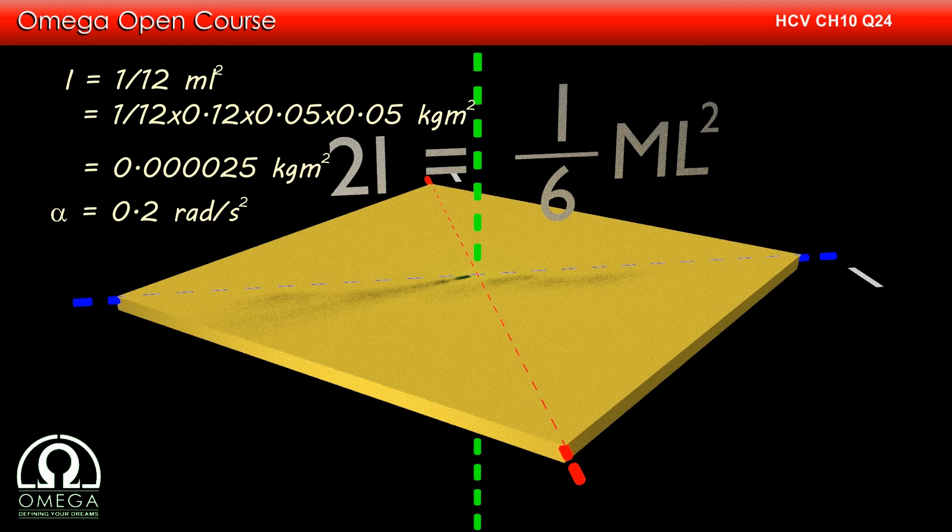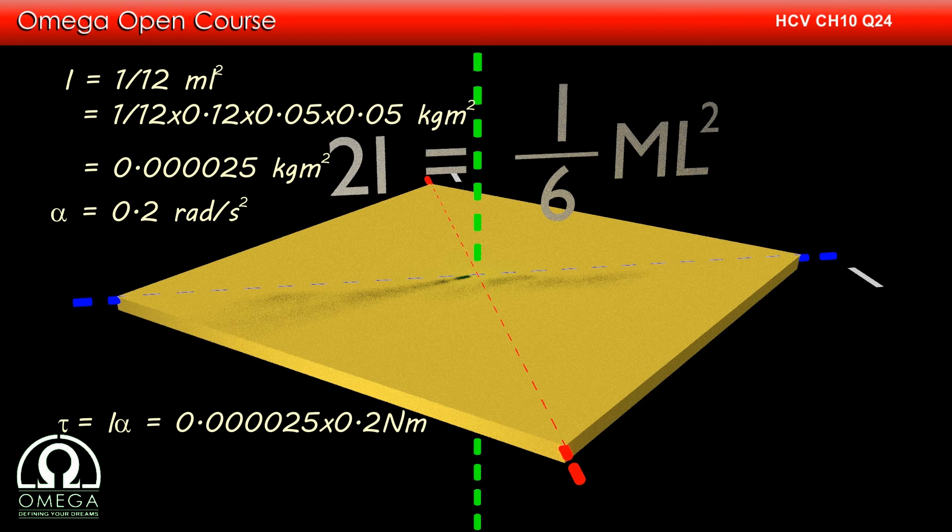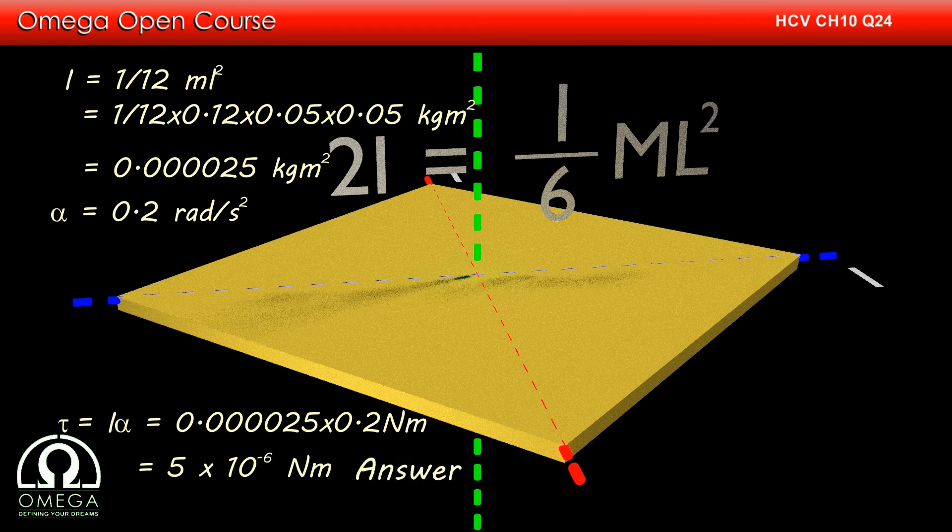Alpha is 0.2 radian per second squared. Now, torque is equal to moment of inertia into angular acceleration, that is 0.000025 into 0.2 newton meter, or 5 into 10 to the power minus 6 newton meter. This is our answer.